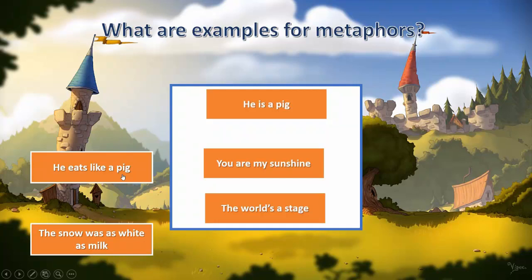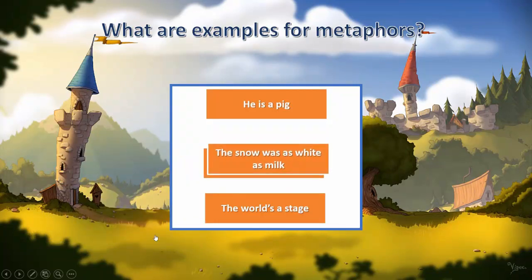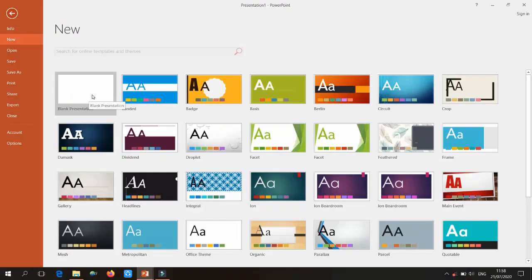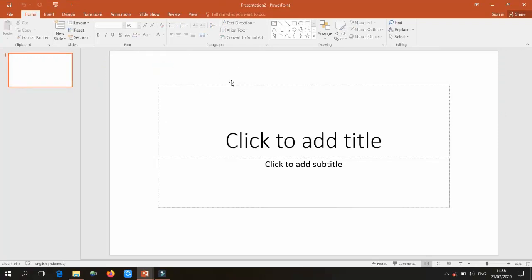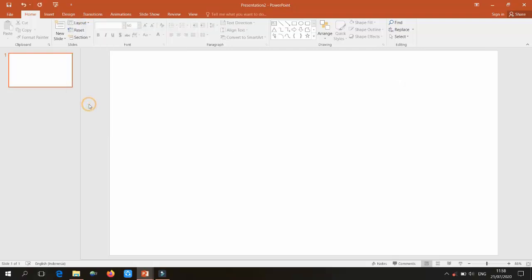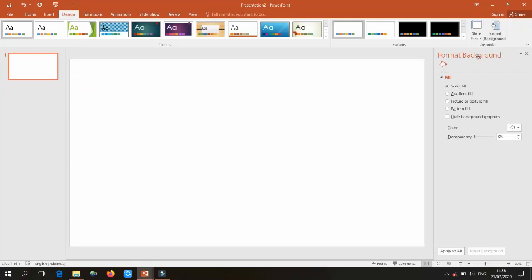Let's move to PowerPoint and learn how to make this game. First, select a blank presentation file and remove the two text boxes by changing the layout to blank. Then go to the Design section and open the Format Background menu.